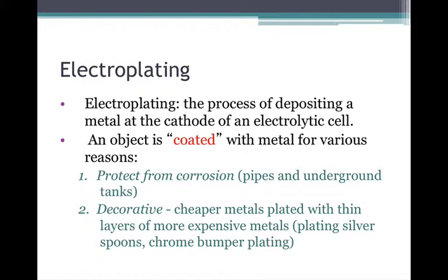Well, one of the reasons would be electroplating. This is the process of depositing a metal at the cathode of an electrolytic cell. The object is coated with metal for various reasons. It could be to protect them from corrosion, like pipes and underground tanks. Or it could be decorative, cheap metals plated with thin layers of more expensive metals, like plating silver spoons or chrome bumper plating.